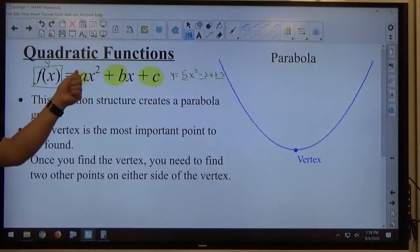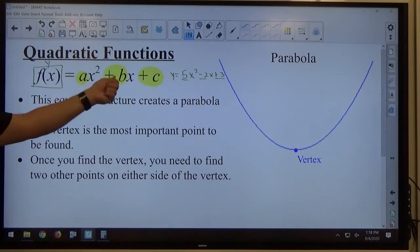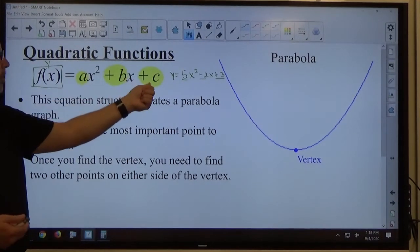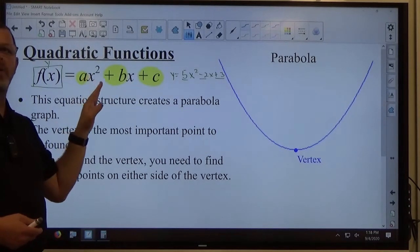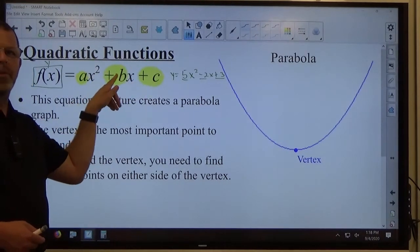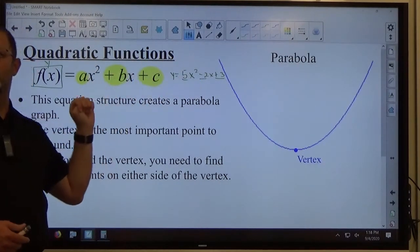So again, it's just a matter of whatever is in front of x squared is a, whatever is in front of x is b, whatever is the constant is c. The signs are what they are. So plus signs in an abstract formula mean that the signs in your problem are what they should be.